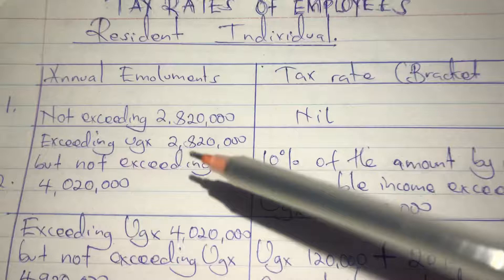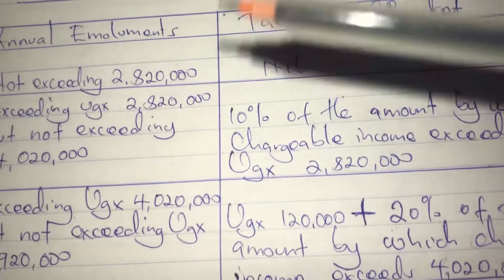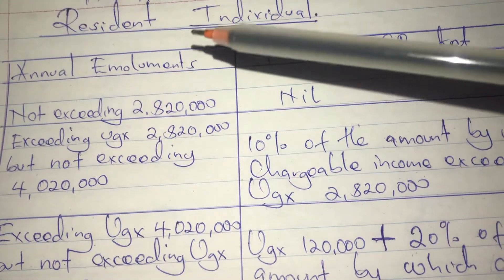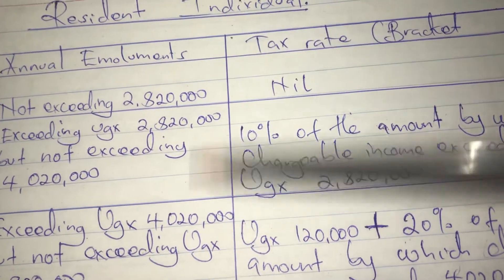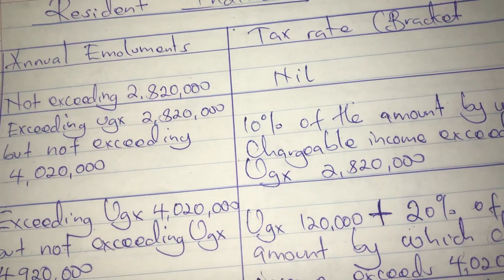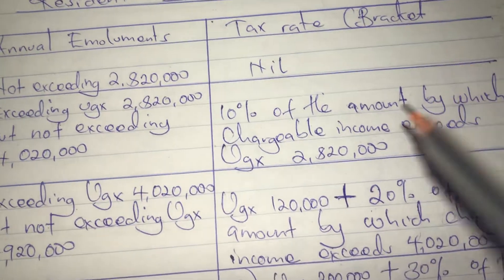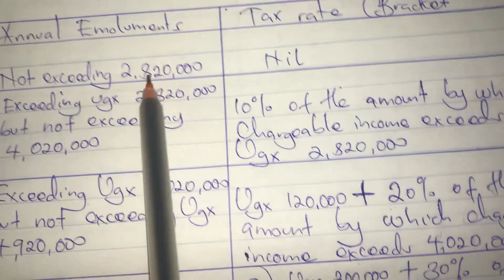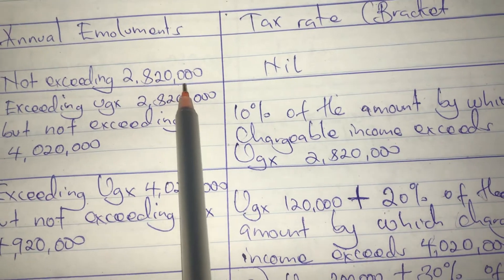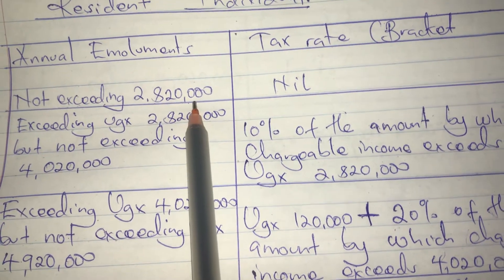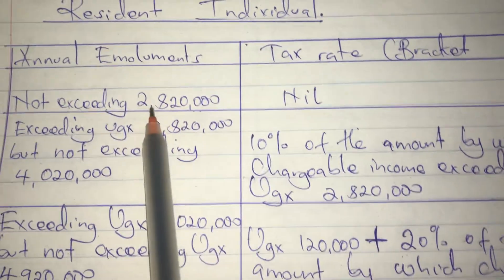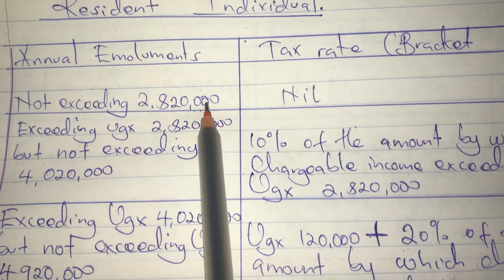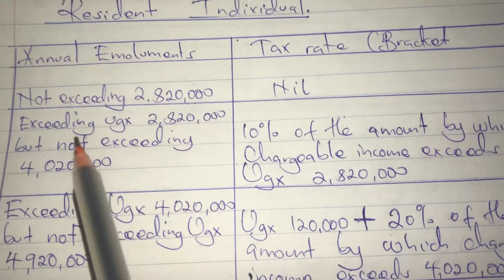We have the column of annual emoluments and then the tax rate brackets. This is on an annual basis, meaning it is for a year. If the amount that you earn does not exceed 2,820,000 a year, it is not taxed — the tax rate is nil.